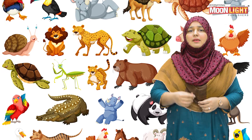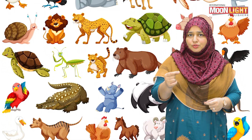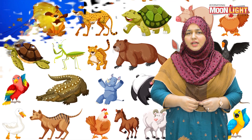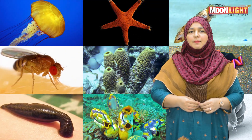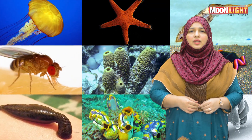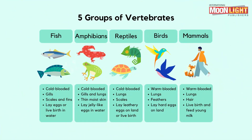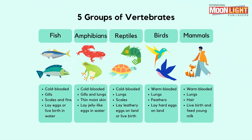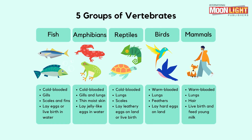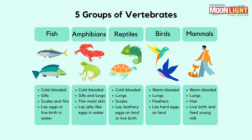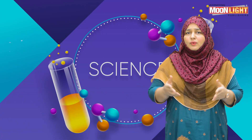Vertebrates are those animals which have a backbone, and invertebrates are those animals which do not have a backbone. Vertebrates are further divided into five subgroups: reptiles, birds, mammals, fishes, and amphibians.